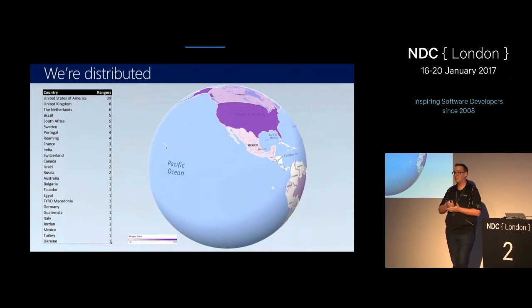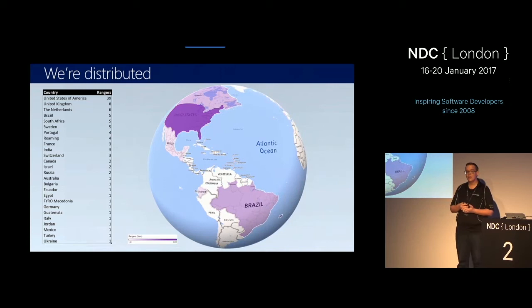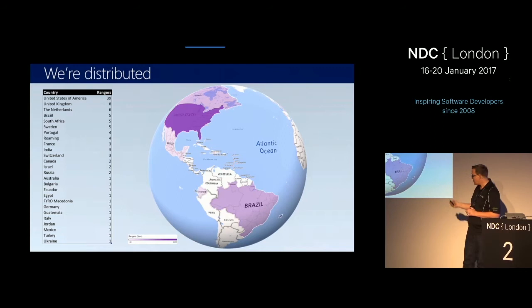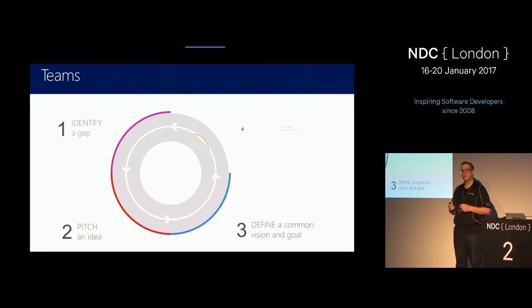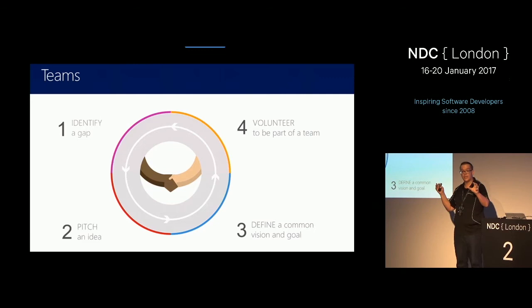Being distributed is also one of the challenges when it comes to being an ALM Ranger. When you want to schedule a meeting, you have to make sure that everyone is awake at the same moment — you have to pick a time zone, pick a time and agree on where we're going to do our meeting. This has influenced our process. The way we do DevOps has been influenced by the fact that we are a distributed team all over the world.